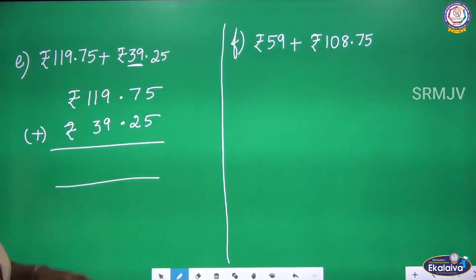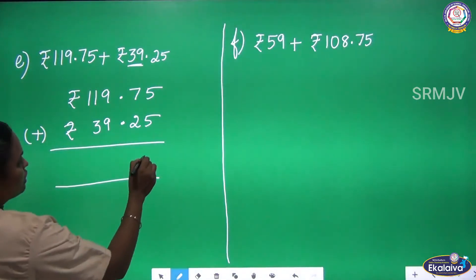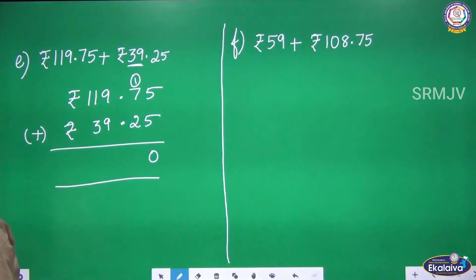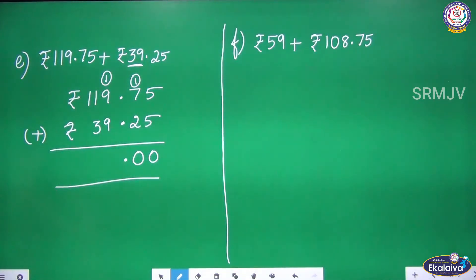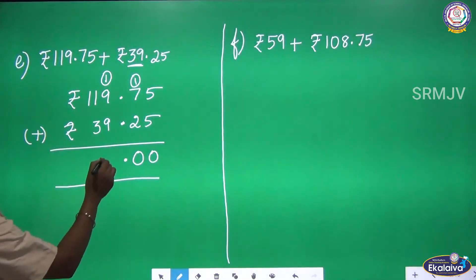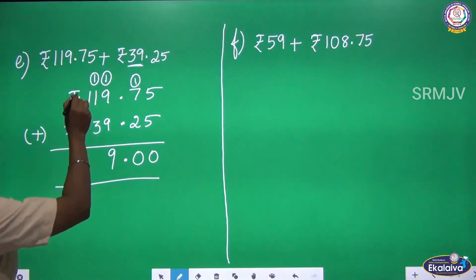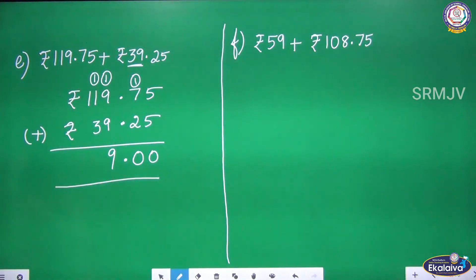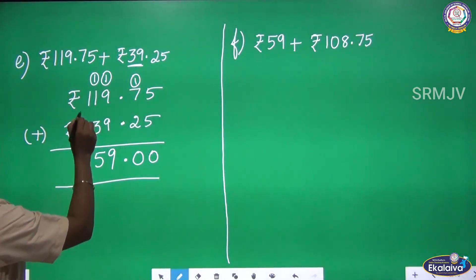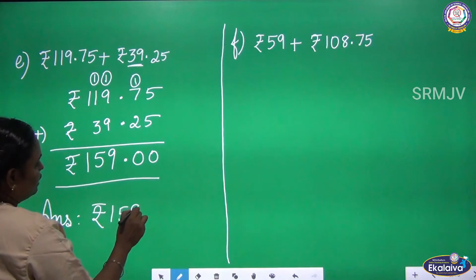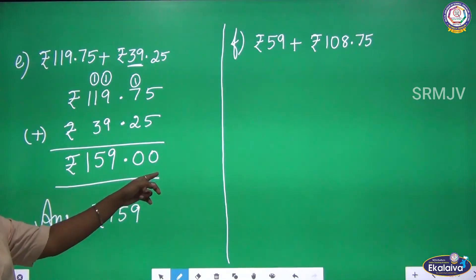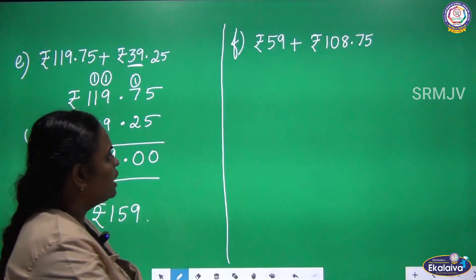What is 5 plus 5? 10 — write 0. 1 carry over. 7 plus 1 is 8, 8 plus 2 is 10 — write 0. Put the dot, 1 carry over. 9 plus 1 is 10, 10 plus 9 is 19 — write 9, 1 carry over. 1 plus 1 is 2, 2 plus 3 is 5 — write 5, then 1. Write the Rupees symbol. The answer is Rupees 159. There are no Paise, so you can write only Rupees 159.